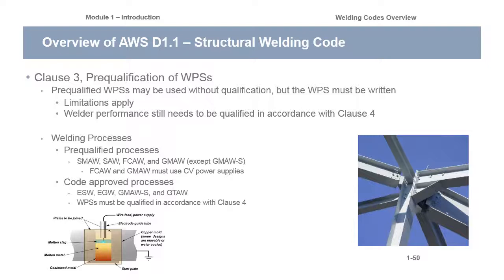Clause 3 — pre-qualification of WPSs. Pre-qualified WPSs may be used without qualification, but the WPS must be written. Limitations do apply. You can't just say this is pre-qualified — you have to follow a very strict recipe. And even though the WPS is pre-qualified, the welder still needs to be qualified. They need to run a test plate and get it x-rayed or do bend tests, whatever Clause 4 says for that particular type of weld.